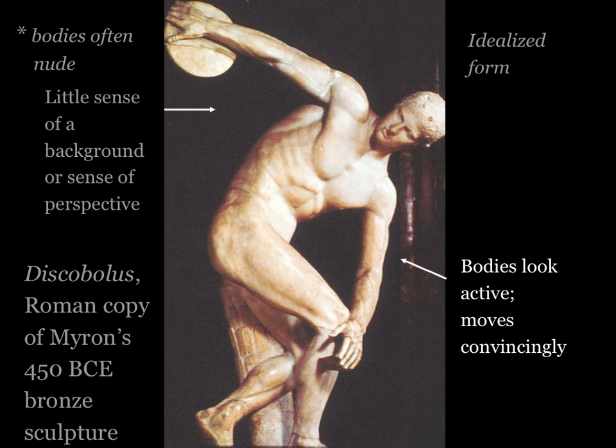As an observer of this art, our eyes are drawn to the figures, the bodies. What we see is that the bodies look active and move convincingly. You can imagine that when Discobulus is getting ready to throw the disc, he just unwinds from the position he's in and lets go of the disc. We are convinced that the position his body is in is accurate to the task at hand.